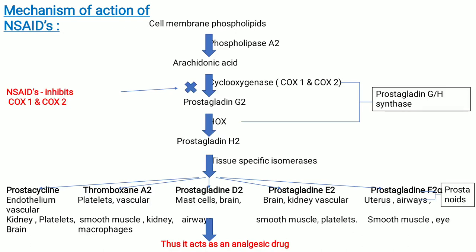Mechanism of action of non-steroidal anti-inflammatory drugs. During pain, fever, and inflammation, arachidonic acid is liberated from the phospholipid fraction of the cell membrane by the enzyme phospholipase A2. Then arachidonic acid is converted into prostaglandin G2 by the enzyme cyclooxygenase — COX-1 and COX-2. Prostaglandin G2 is converted into prostaglandin H2. Prostaglandin H2 is converted into prostacyclin and thromboxane. Then prostaglandin D2, prostaglandin E2, and prostaglandin F2-alpha are formed by tissue-specific isomerases. All these five are called prostanoids.